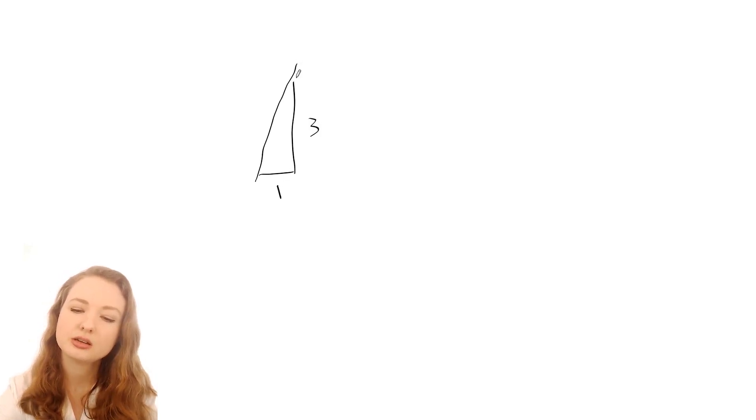Slope is just how many units up or down a line goes when it goes across one unit. If I go across one unit and go up three units, then that line has a slope of three. Slope is usually given the symbol M, so we would say M equals three for that line.